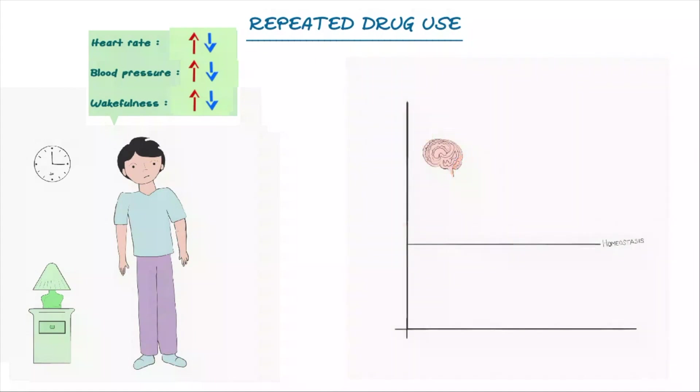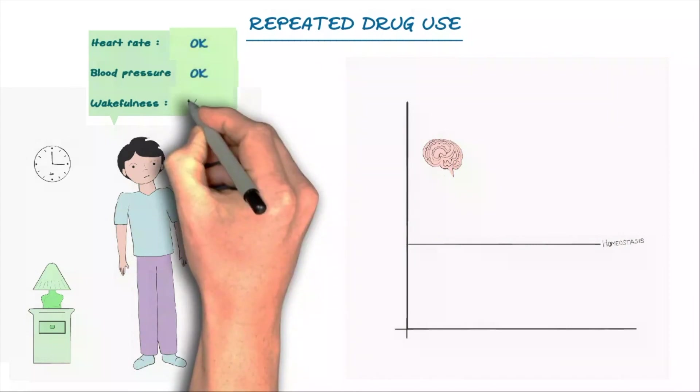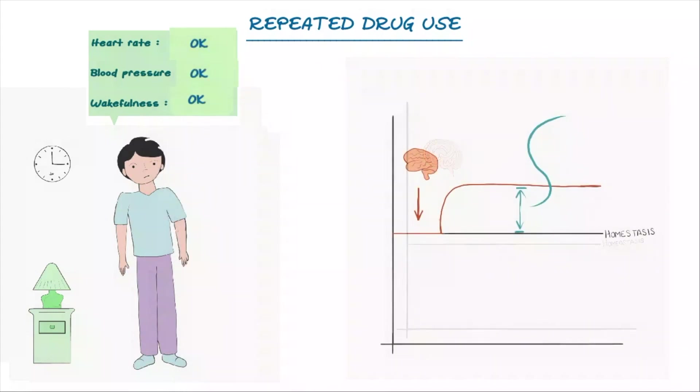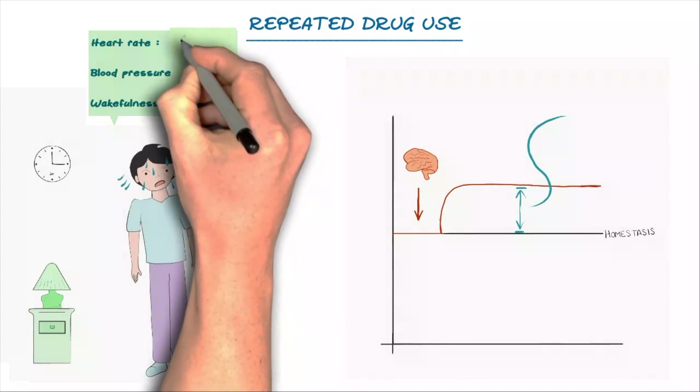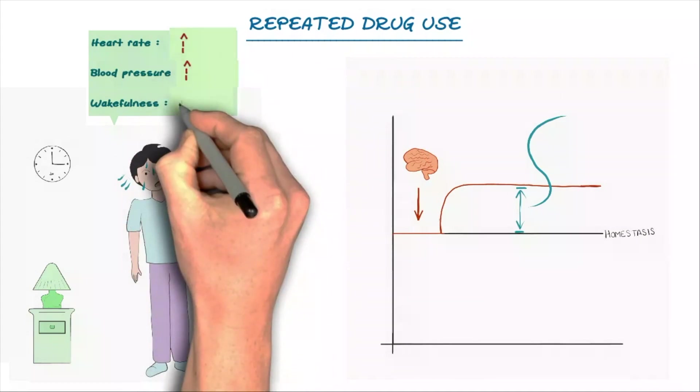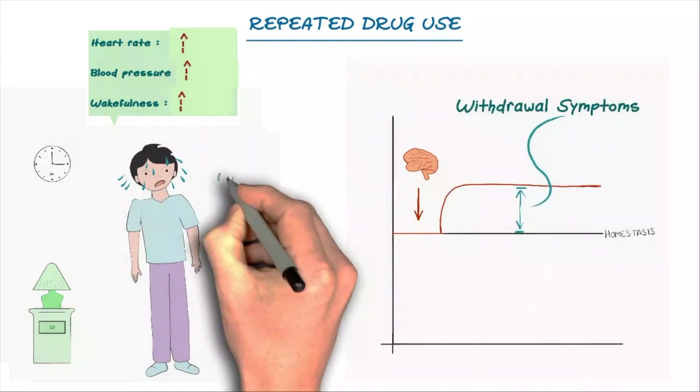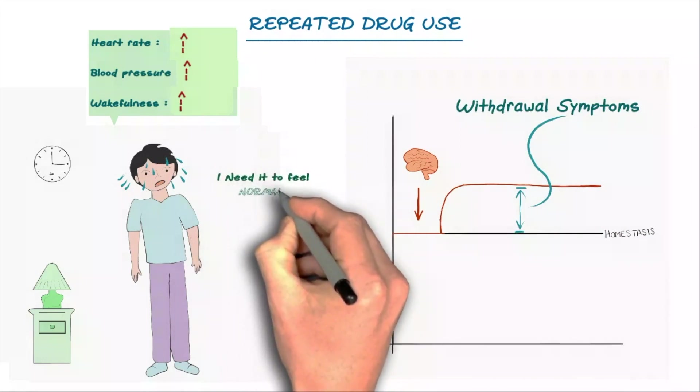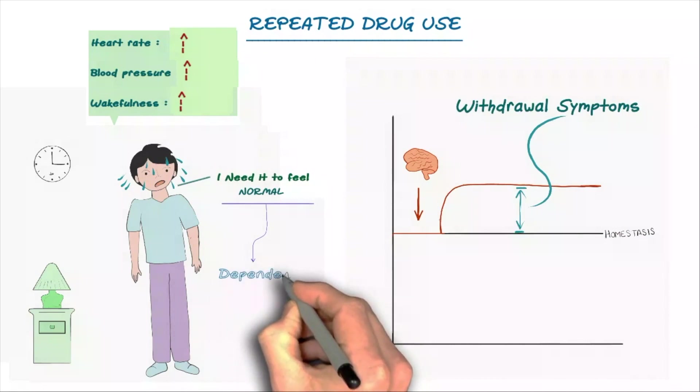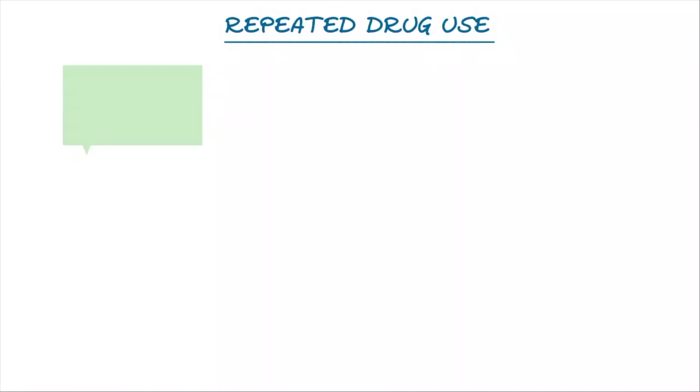Now let's say 3pm in the bedroom rolls around, but there is no drug. In that situation, the brain still increases everything. But the changes aren't countered with the effects of the drug. And so the person can feel awful. And these are called withdrawal symptoms. These symptoms can persist to the point where a person may need drugs just to feel normal. And if that's the case, they are considered to be dependent on that drug.